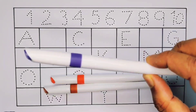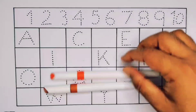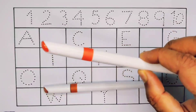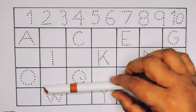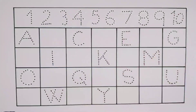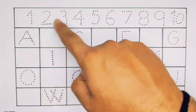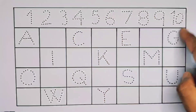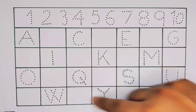Purple color, orange color, and brown color. Now let's learn the numbers, counting one to ten, and the alphabet A to Z.